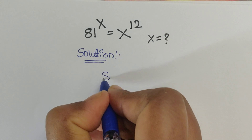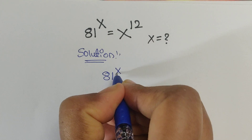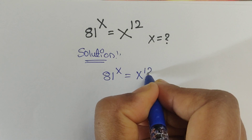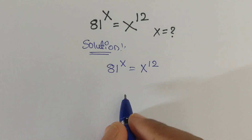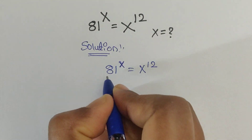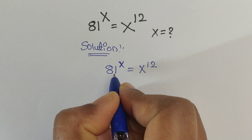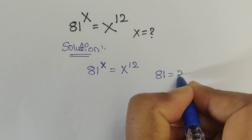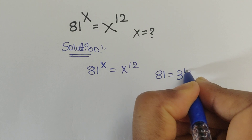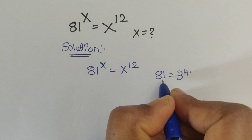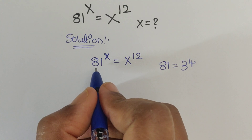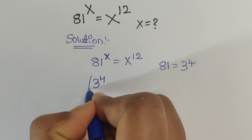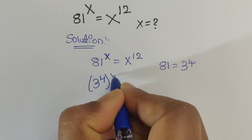So 81 to the power of x equals x to the power of 12. Here we have 81, and 81 we can write as 3 to the power of 4, since 3 to the power of 4 equals 81. So we can write 3 to the power of 4, all to the power of x, equal to x to the power of 12.